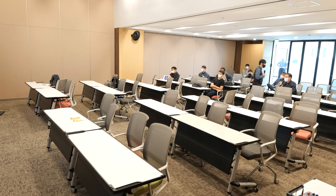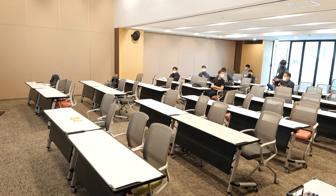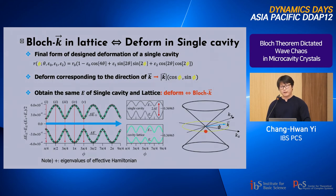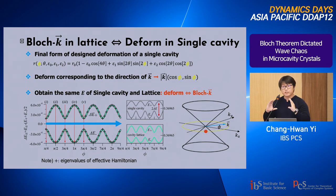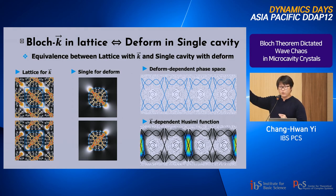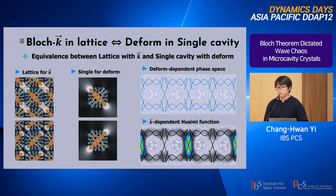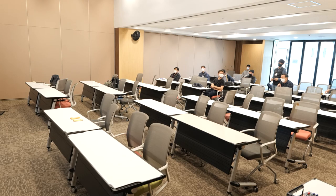Audience question: I missed your explanation — you compare something between the Bloch k in the lattice and the deformed micro-cavity. What becomes the same? Speaker response: First, the energy eigenvalues become the same. Also, we have checked that the eigenstates — meaning the spatial wave function patterns — also resemble each other. One caveat: in a single micro-cavity the eigenvalues have to be complex, so we can only guarantee the real parts match.